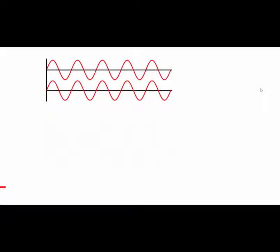Interference can be explained using the principle of superposition of waves. Here we have two waves. You'll note that they are perfectly in phase with each other and that they have the same amplitude — two identical waves in phase with each other.